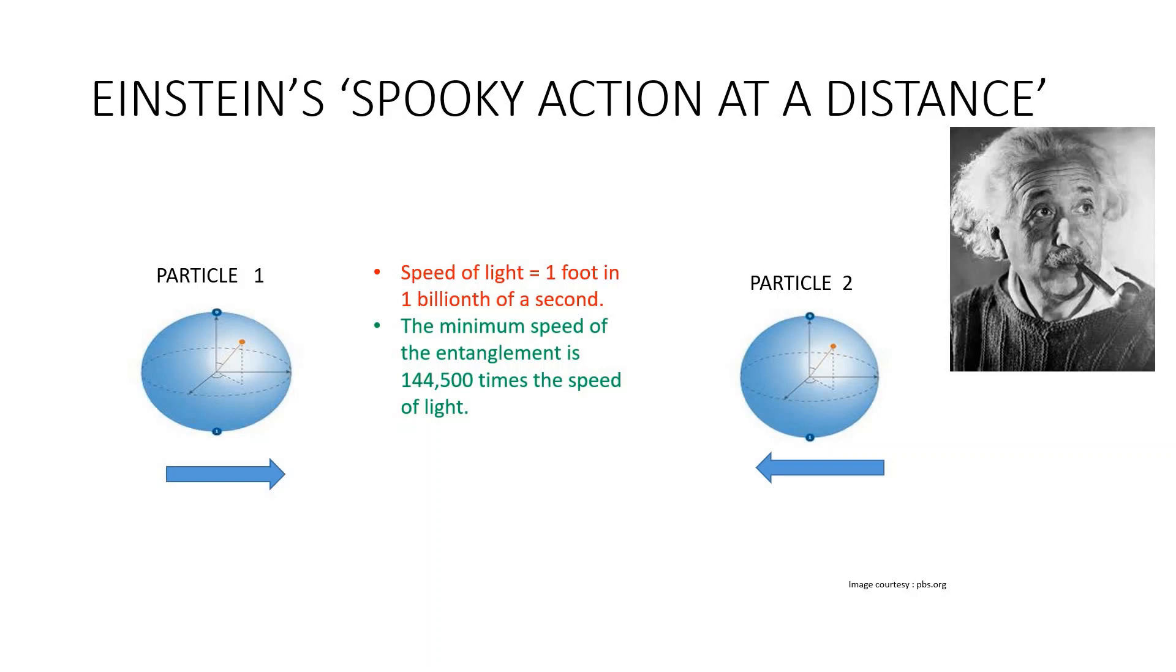It's really uncanny when we measure the spin direction of the both entangled particles. If the horizontal spin direction of one particle is left, then the spin direction of the other particle must be right. We can measure the spin direction of the two particles in quick succession very fast. We know that the fastest thing in this universe is light. One foot in one billionth of a second.